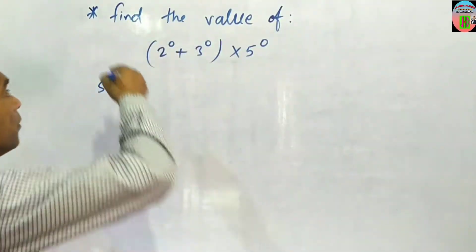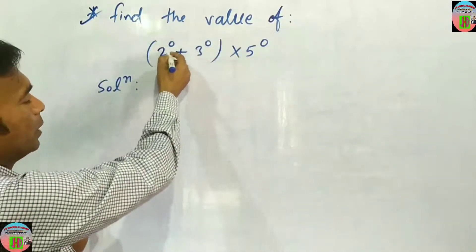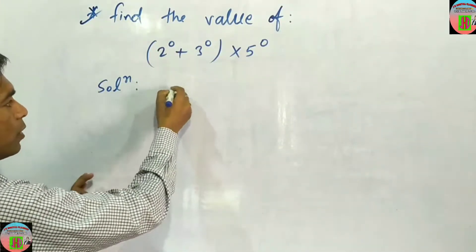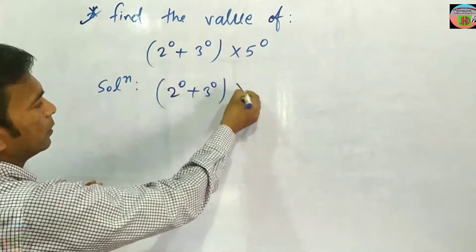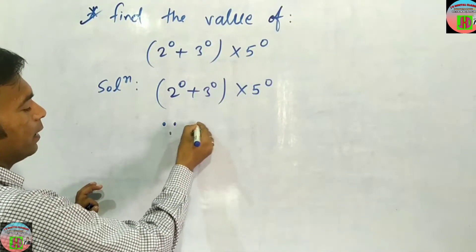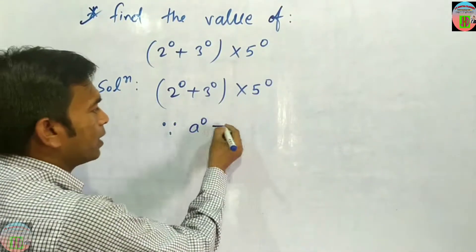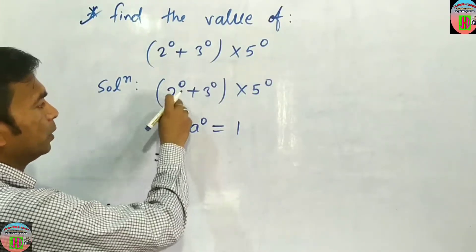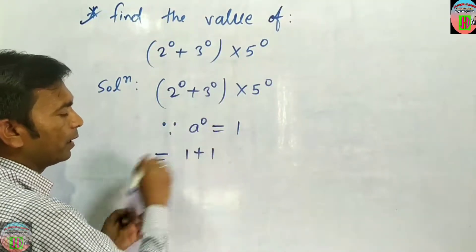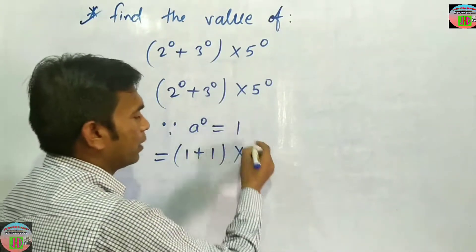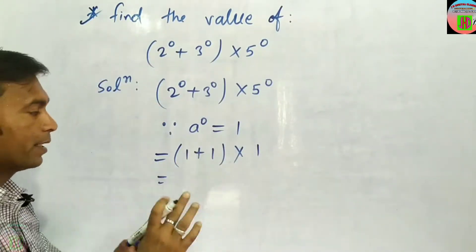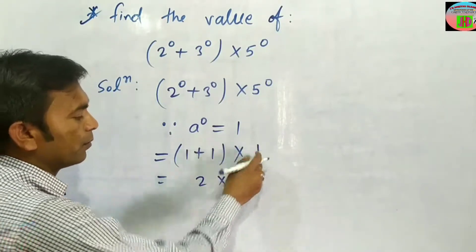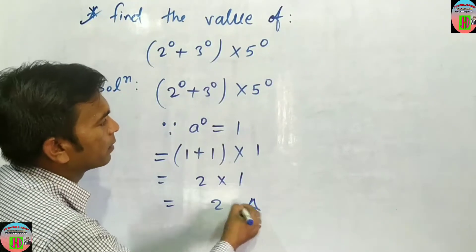This question is: find the value of 2 to the power 0 plus 3 to the power 0 into 5 to the power 0. As you know, any number which has power 0, its value is 1. Applying this: 2 to the power 0 is equal to 1, plus 3 to the power 0 is equal to 1, into 5 to the power 0 is value 1. Then 1 plus 1, firstly solve the bracket: 1 plus 1 equal to 2, into 1. 2 into 1 equal to 2 is your right answer.